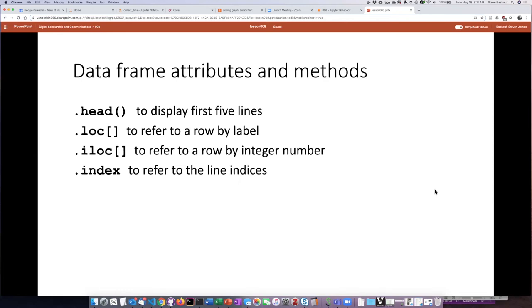So just to review, these are some of the attributes and methods that we've used with data frames. .head is a method for displaying the first five lines of a data frame.